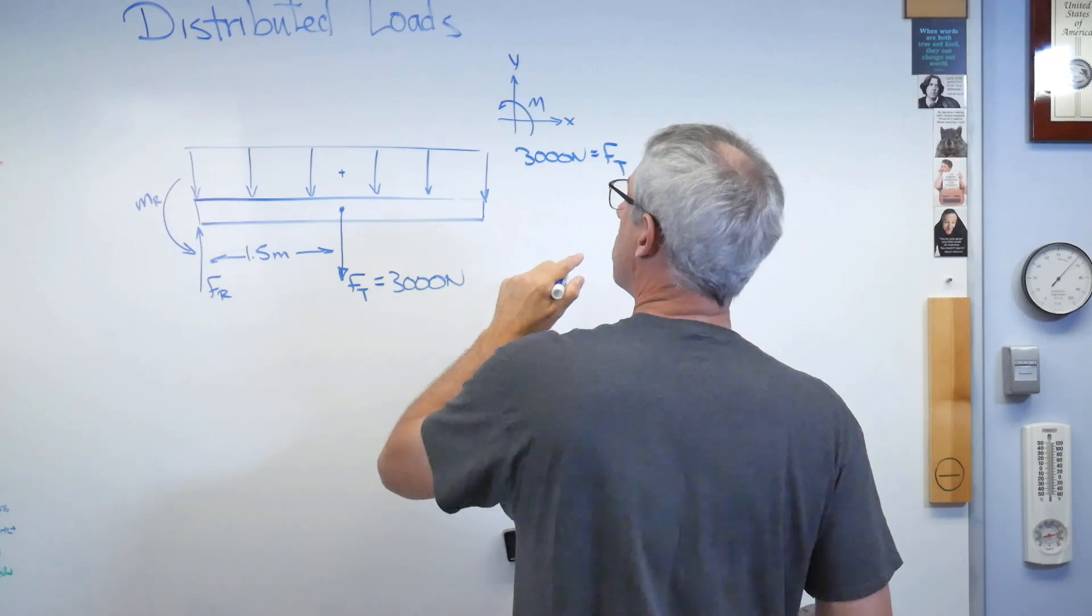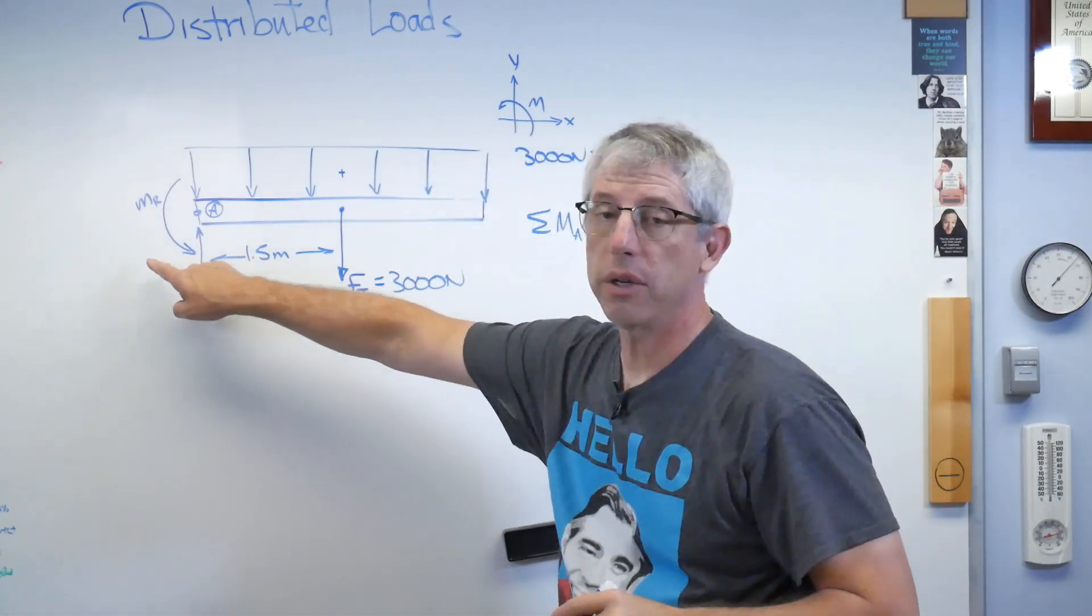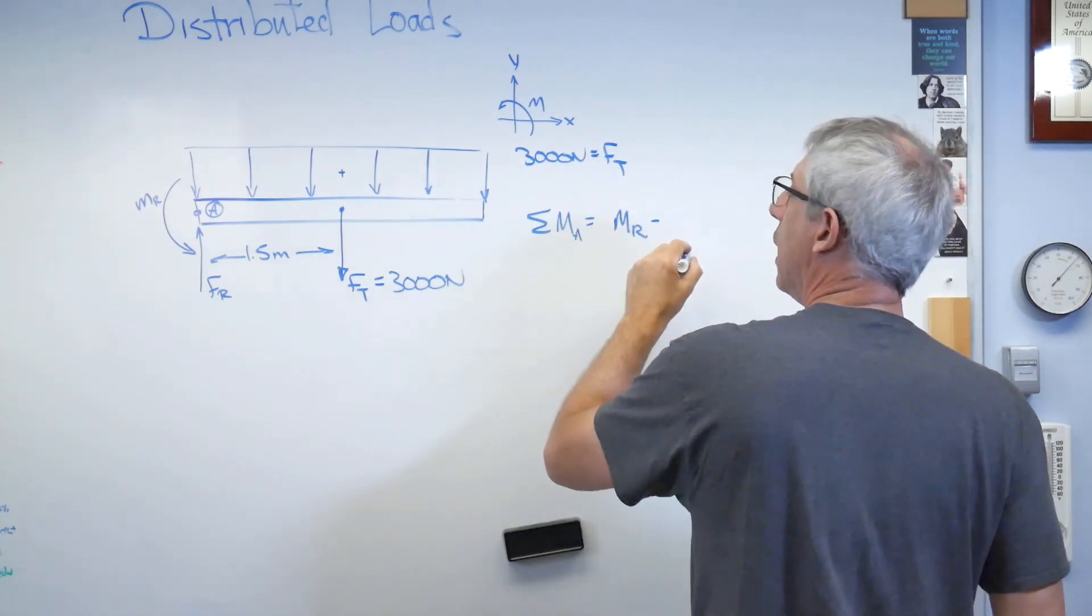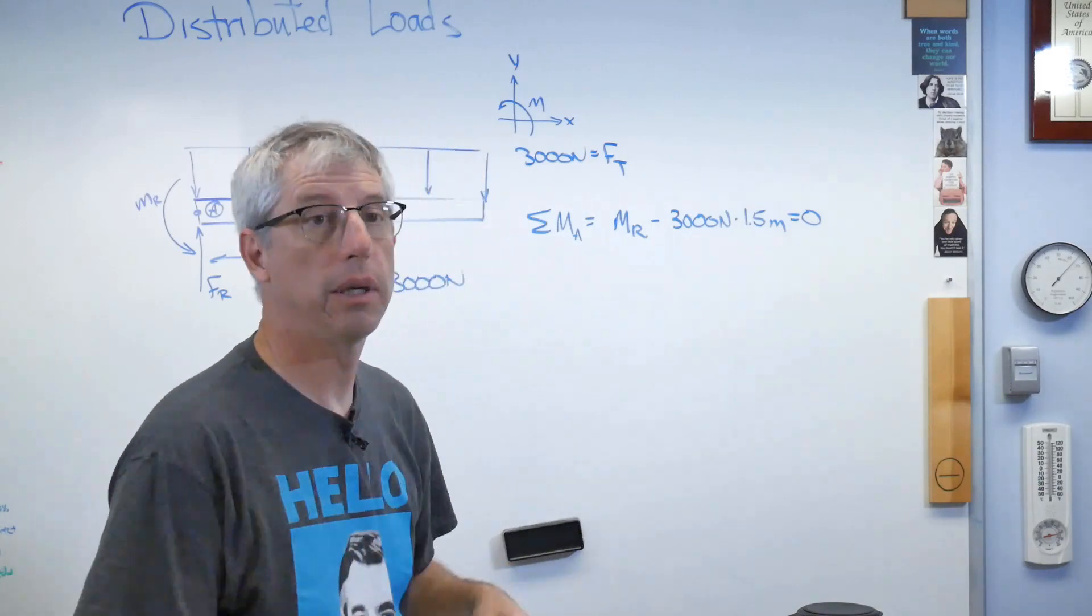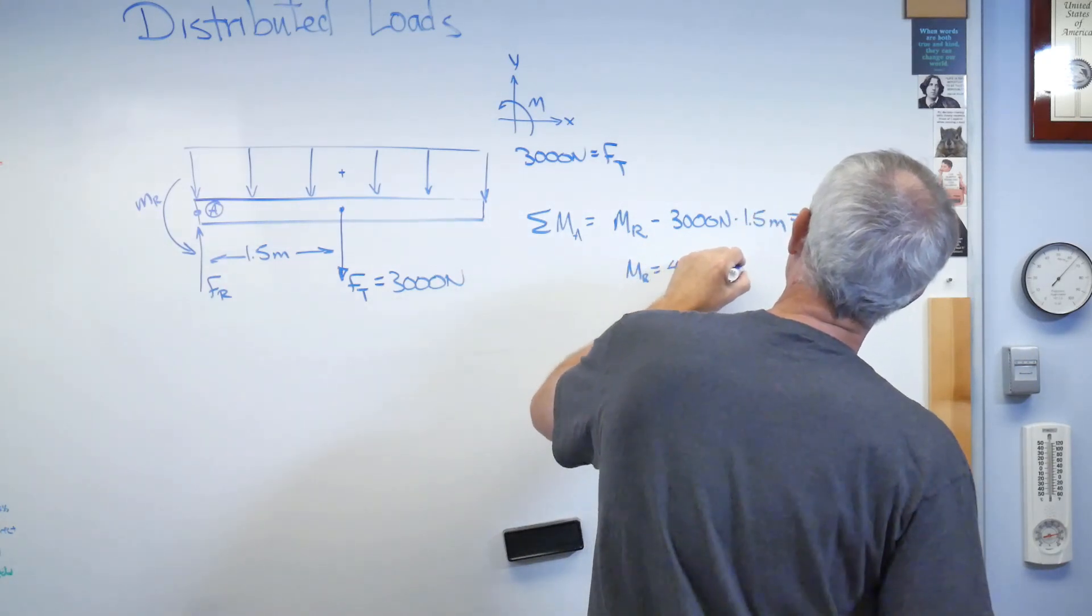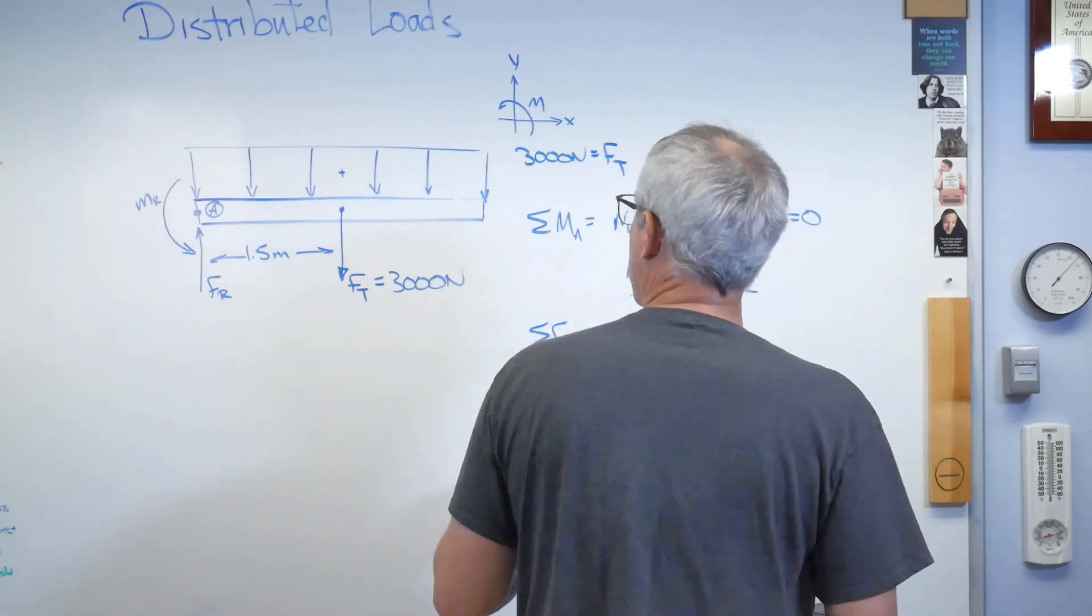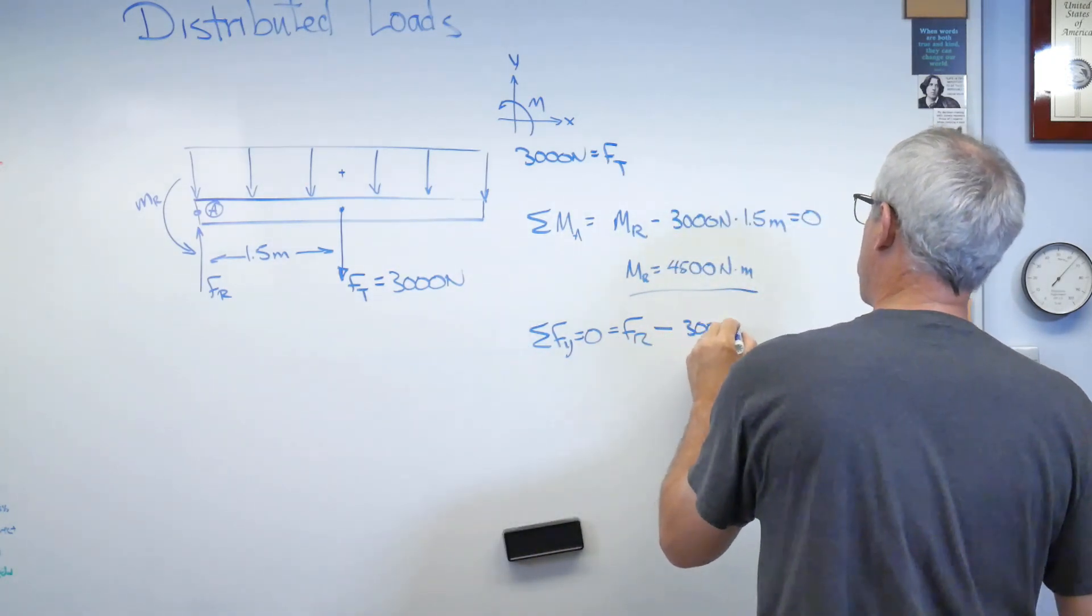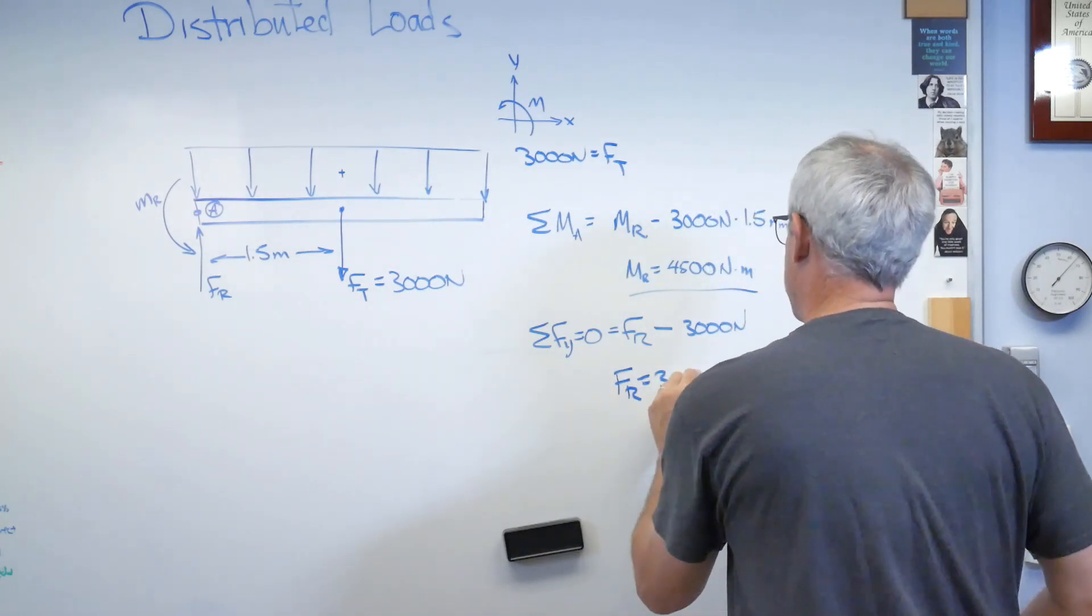I'm going to sum the moments about this point right here, and I'll call that point A maybe. So my reaction moment is going to be counterclockwise, and this is going to be acting clockwise, so this is going to be negative 3,000 newtons times 1.5 meters, and that all has to equal 0. So my reaction moment is 4,500 newton meters. And the forces in the vertical direction, that's really easy in this case. This is going to be my reaction force, which I've drawn up minus 3,000 newtons, my total force there from the distributed forces. And I'm going to get my reaction force, that's 3,000 newtons.